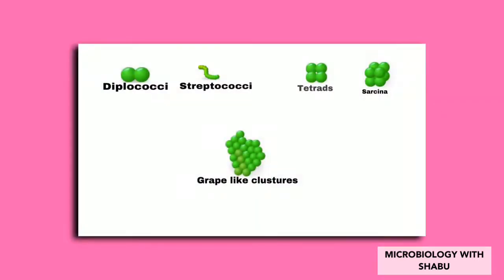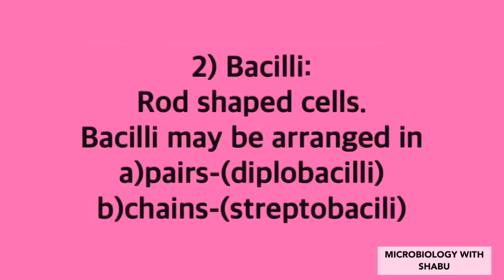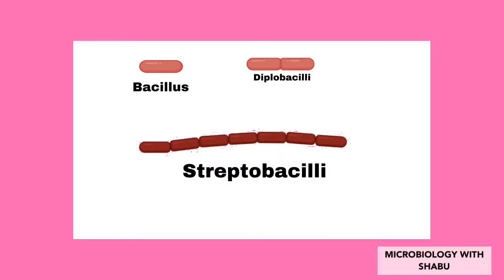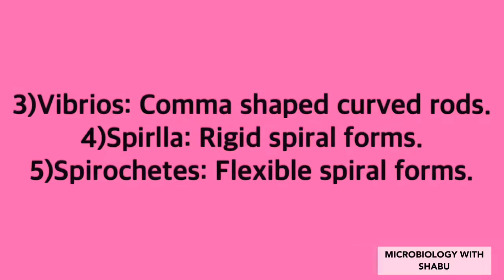Two: bacilli — rod-shaped cells. Bacilli may be arranged as (a) pairs — diplobacilli, (b) chains — streptobacilli. Three: vibrios — comma-shaped curved rods. Four: spirilla — rigid spiral forms. Five: spirochetes — flexible spiral forms.